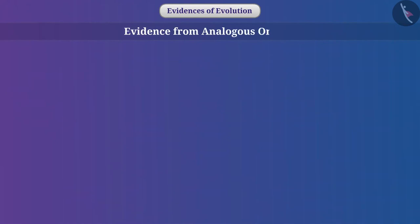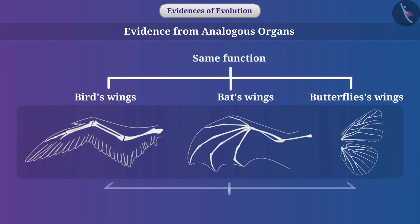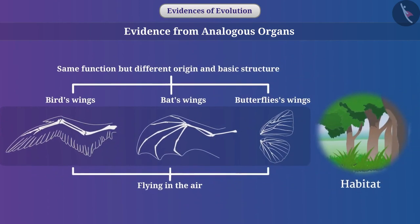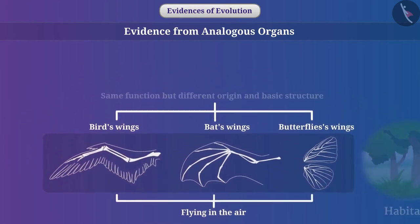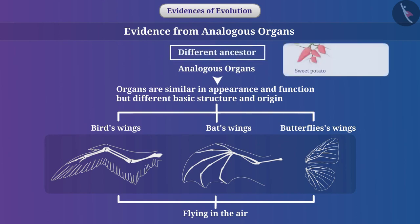Evidence from analogous organs: In birds, bats, and butterflies, wings have the same function — that is, flying in the air — but their origin and basic structure are different. When different groups of organisms have the same habitat, they develop similar structures in appearance and action, which gives them a survival advantage. If the organs are similar in appearance and function but the basic structure and origin are different, they are called analogous organs. Analogous structures provide evidence of a different ancestor. Are sweet potato and potato also analogous to each other? Try to find its answer by yourself.